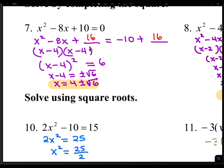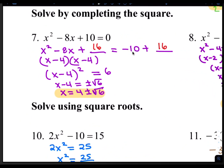For number 7, it says to solve by completing the square. So we subtract 10 from both sides. Then we have to fill in the blank space by taking half of negative 8 and squaring it. Half of negative 8 is negative 4, and squaring it is positive 16. So we'll add 16 to both sides. Factoring the left side gives us x minus 4 squared. Adding negative 10 and 16 gives us 6. We then take the square root of both sides, leaving us with x minus 4 equals plus or minus the square root of 6. Then we move the negative 4 over by adding it, so x equals 4 plus or minus the square root of 6.